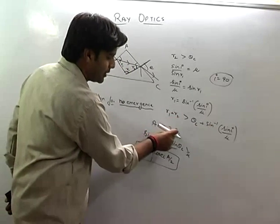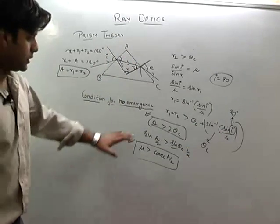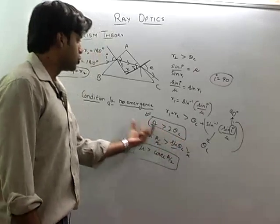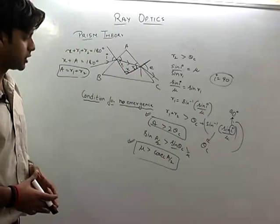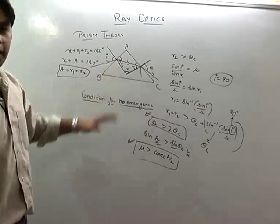A is greater than theta c plus this value. If A is twice of theta c, then total internal reflection will take place. Twice of theta c is when I is 90 degrees.